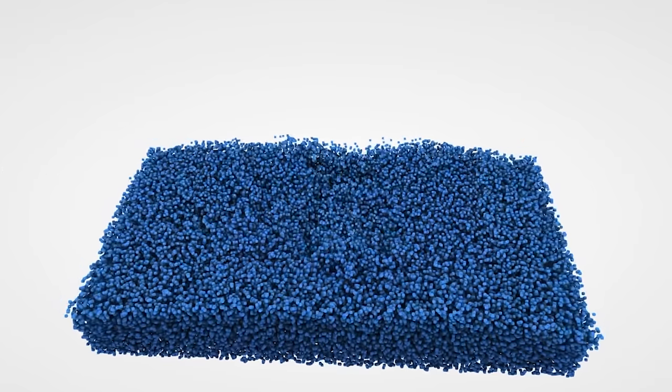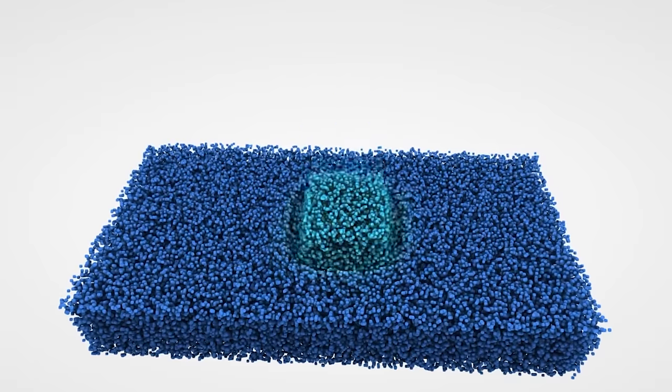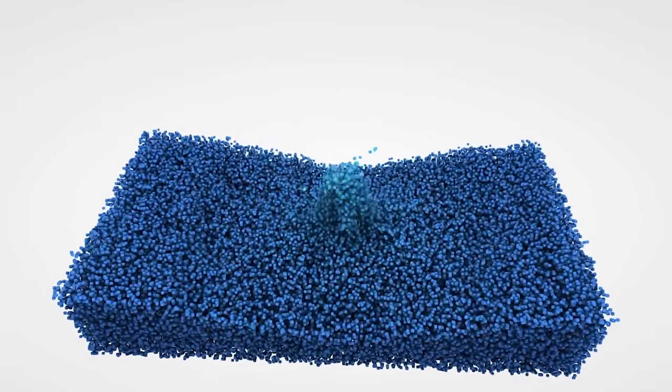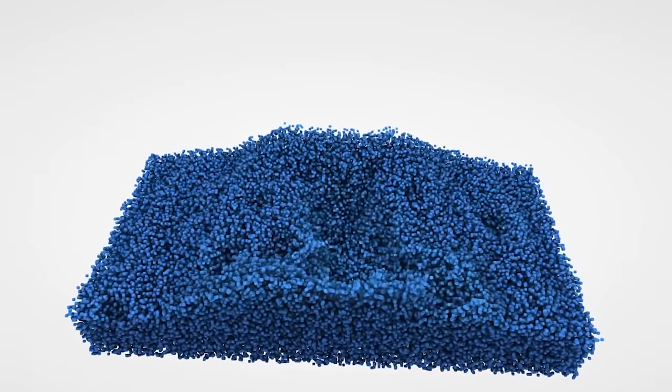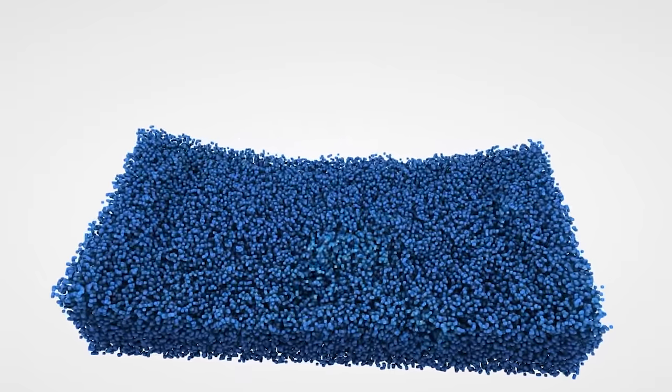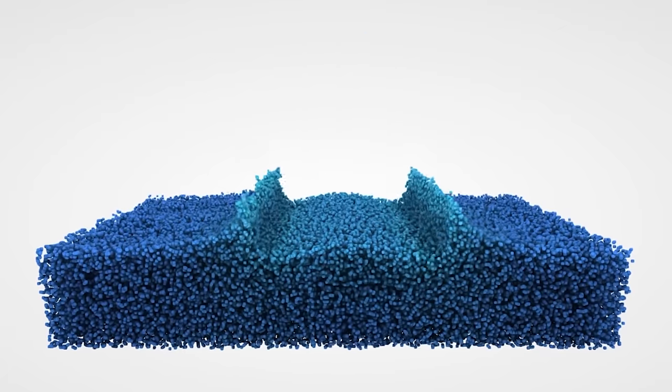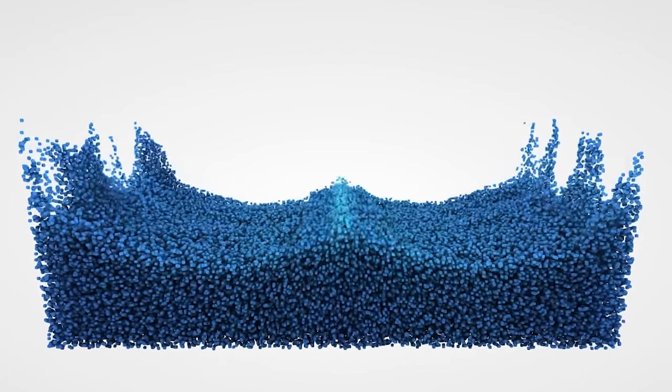Then once the object's no longer impeding the water, all the water suddenly collapses back into that cavity. And since it's all collapsing to the same point, it forces the water out the center at a high velocity. Now one way to make a really good Worthington jet is just to drop a sphere straight down in some water.